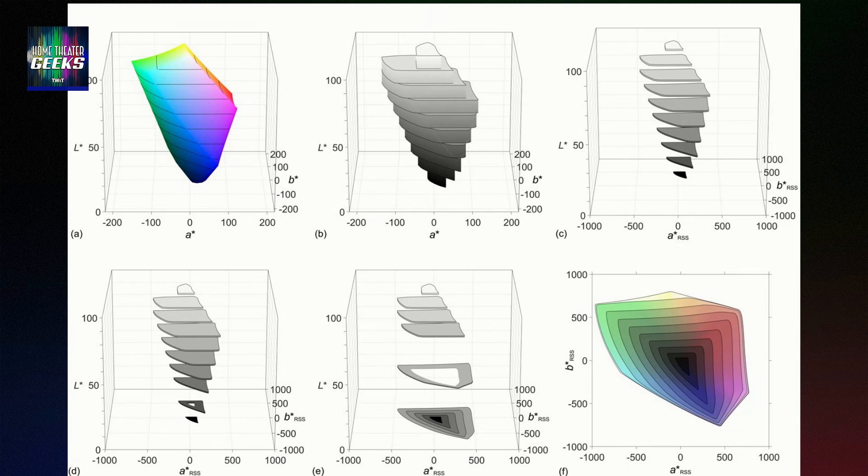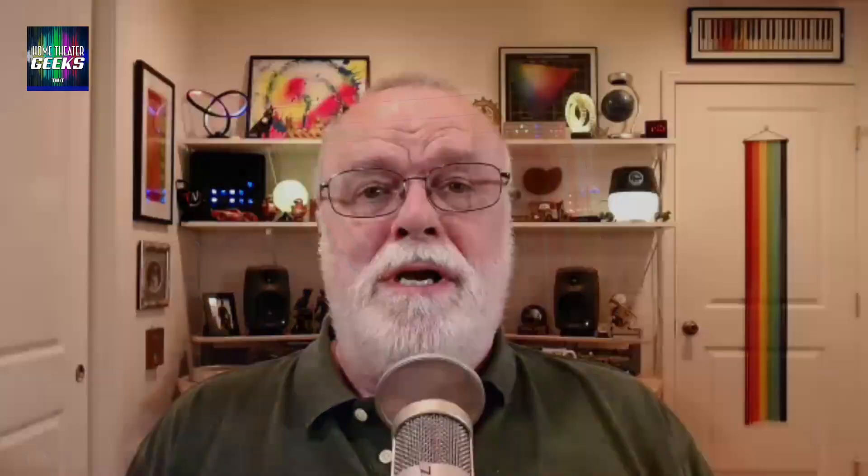It's not unlike a topographical map. If you've looked at maps of an area on the Earth, you might notice lines drawn on that map representing a given elevation. You can see how elevation changes on a topographical map, just like you can see how color representation changes at different brightness levels in this gamut ring representation.